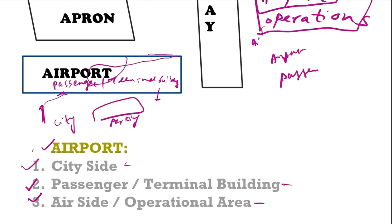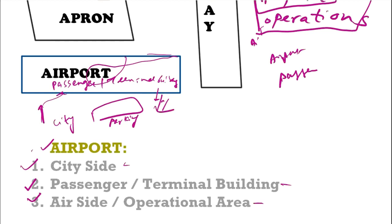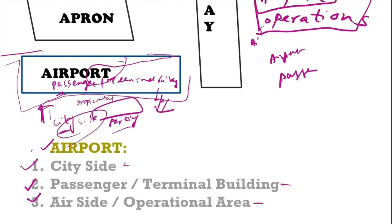Likewise, the passenger who is going out of the airport will be coming from here and going to this side. The area which is outside the airport and exposed to the city — areas like parking and the drop-off or arrival area — this area is known as the city side. This is a part of the airport.